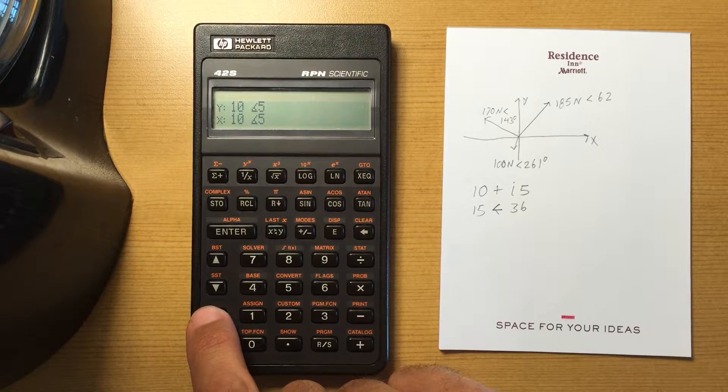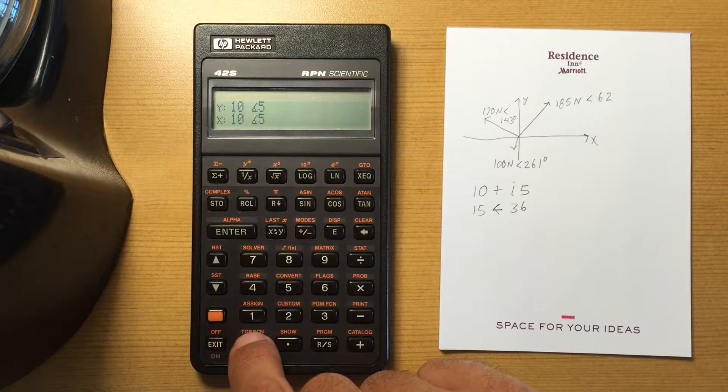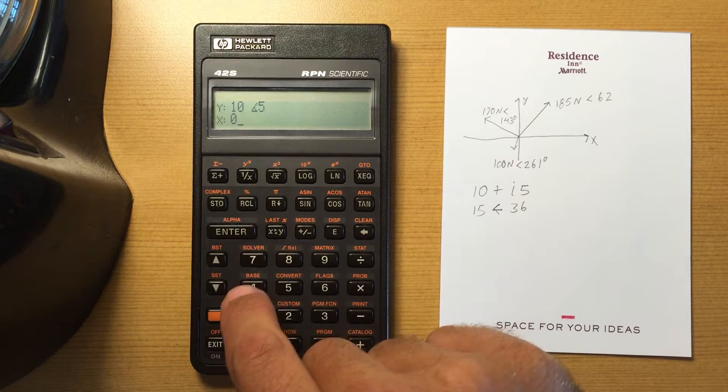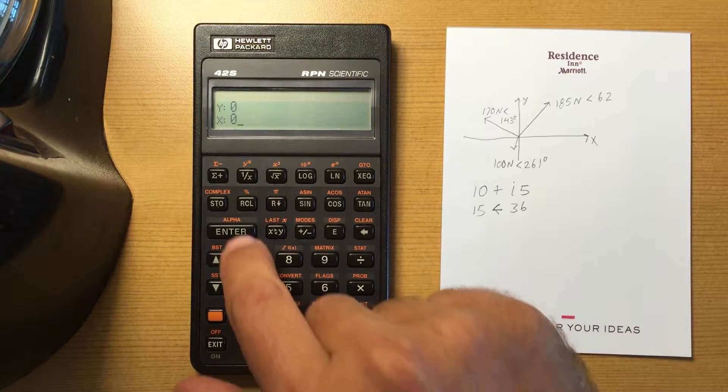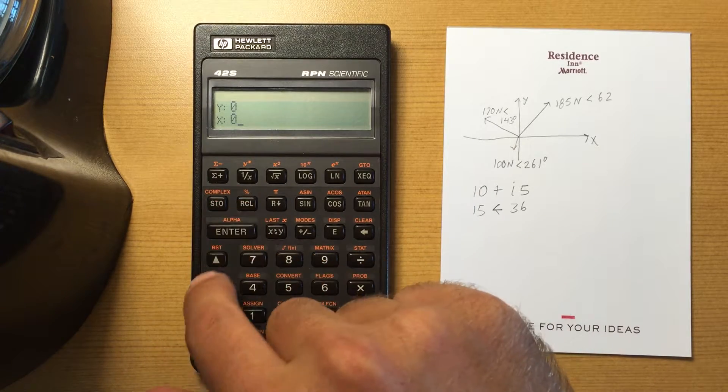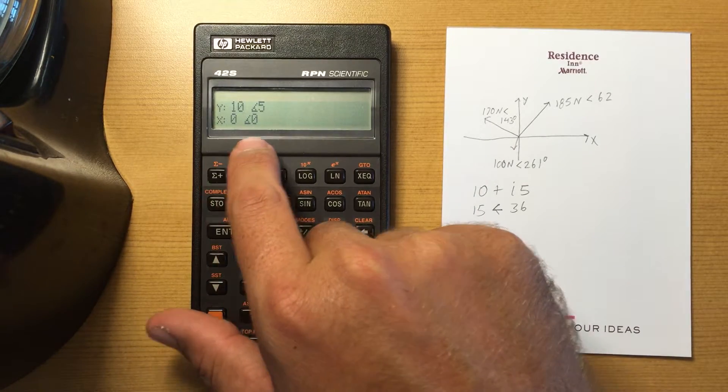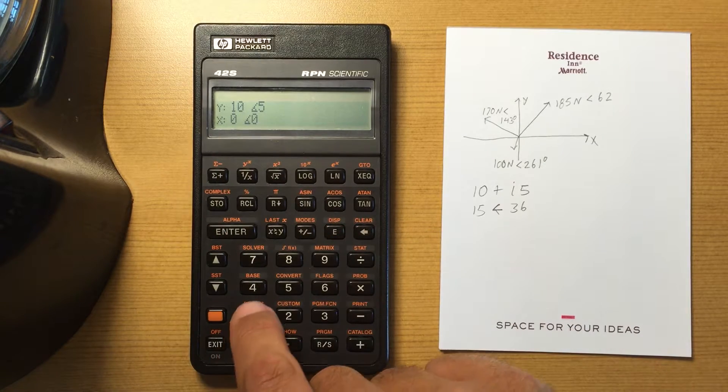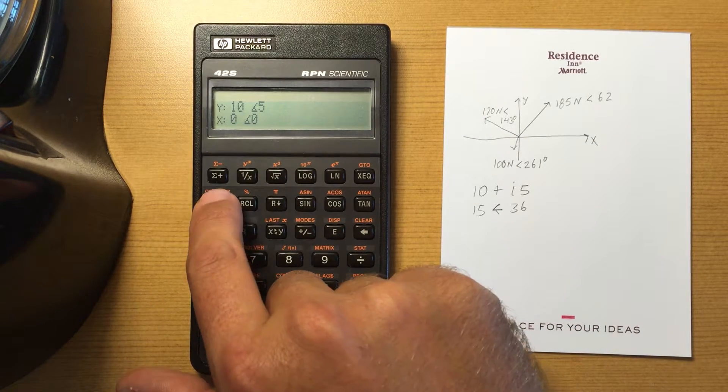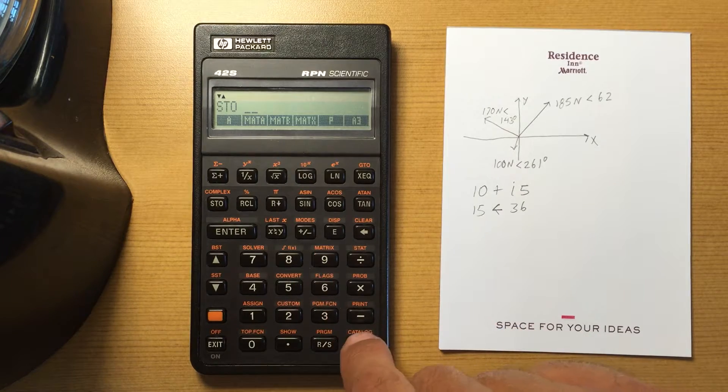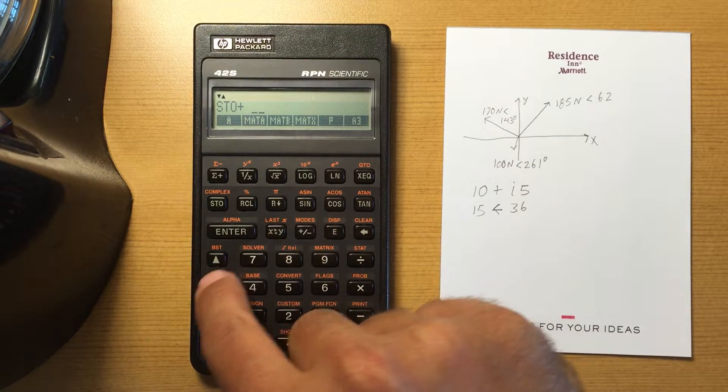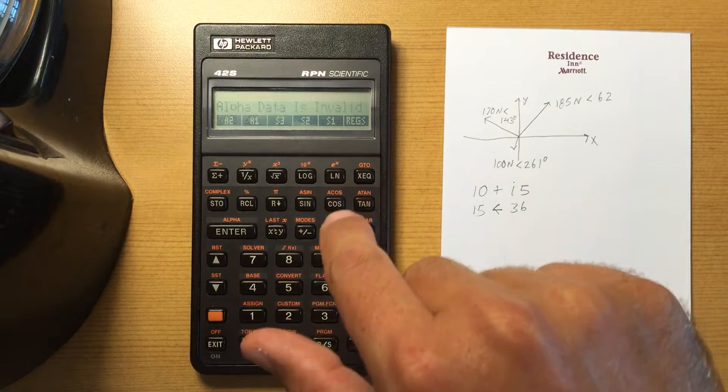To change that, just enter in a complex number of 0, change that to complex 0 angle 0, and then store that, add it to registers.